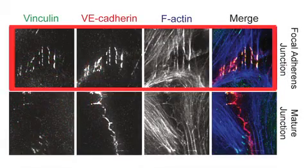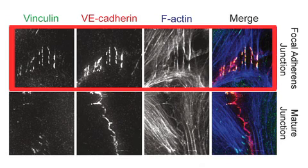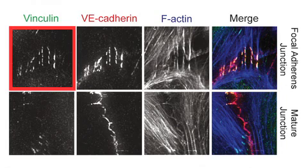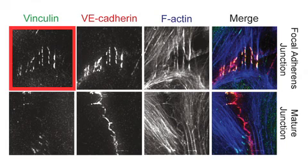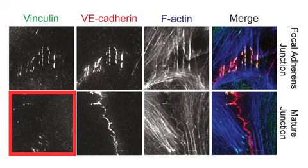These remodelling junctions, which the researchers termed focal adherence junctions, were also distinguished by the presence of the actin-binding mechanosensory protein vinculin, which is recruited to intercellular adhesions by binding to alpha-catenin, but was nevertheless absent from stable endothelial junctions.